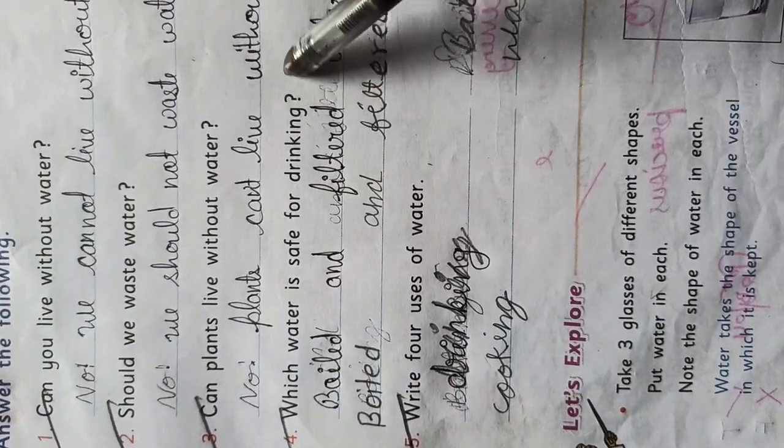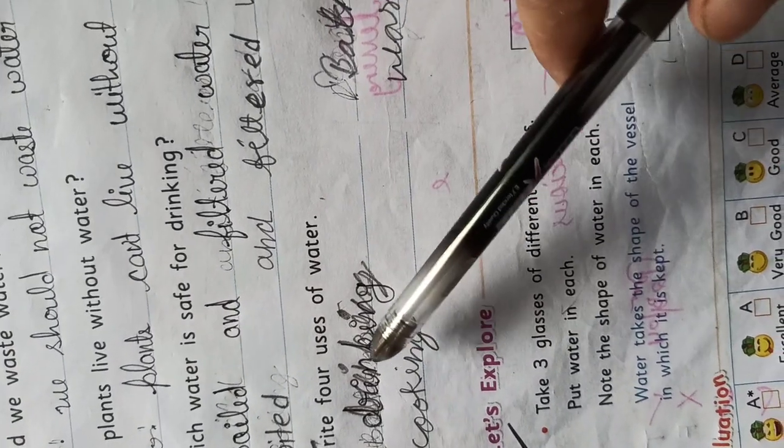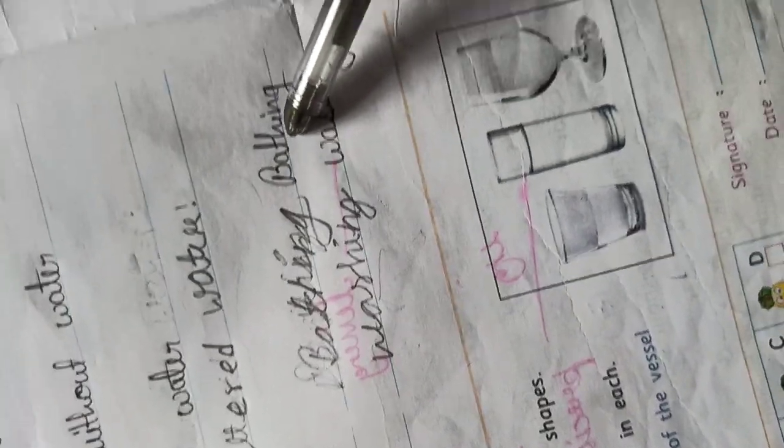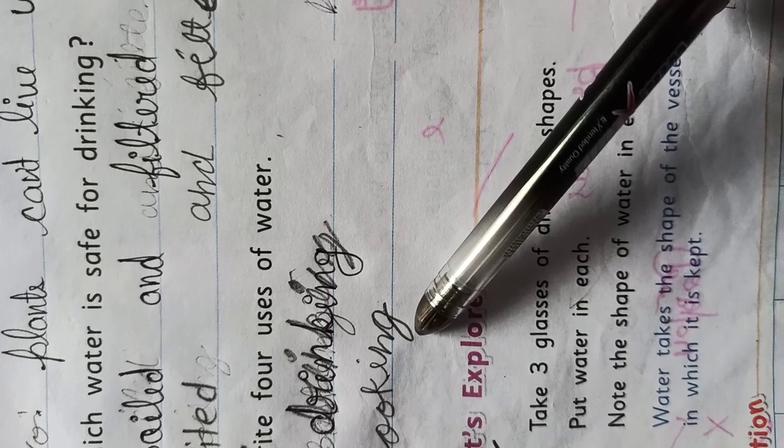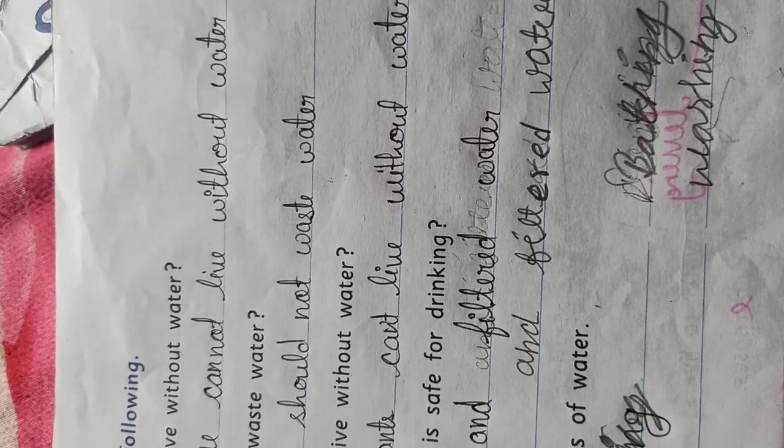Fourth, which water is safe for drinking? Boiled and filtered water. Fifth, write four uses of water: First, drinking, D-R-I-N-K-I-N-G. Second, bathing, B-A-T-H-I-N-G. Third, cooking, C-O-O-K-I-N-G. Fourth, washing, W-A-S-H-I-N-G. Write it clearly and neatly in your textbook and notebook also. Thank you, class.